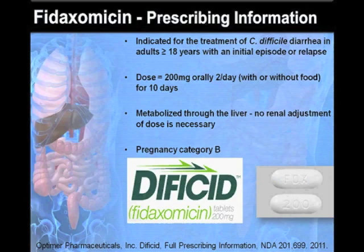Regarding the prescribing information for fidaxomicin, it is indicated for the treatment of C. difficile diarrhea in adults 18 years or older with an initial episode or a relapse. The dose is 200 mg orally twice a day with or without food for 10 days. The medication is metabolized through the liver and no renal adjustment of dose is necessary. Fidaxomicin is pregnancy category B, and in general it is well tolerated with minimal side effects.